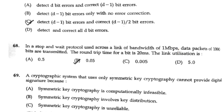In a stop-and-wait protocol used across a link of bandwidth 1 MB per second, data packets of 1000 bits are transmitted. The round trip time for a bit is 20 milliseconds. The link utilization is 0.05.